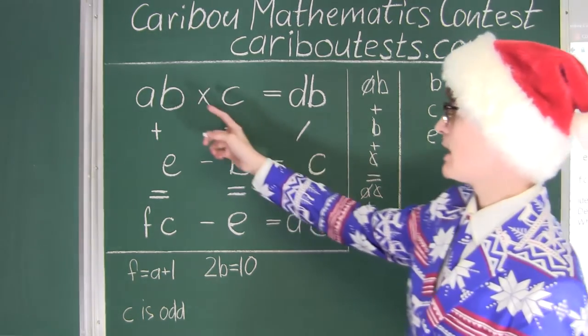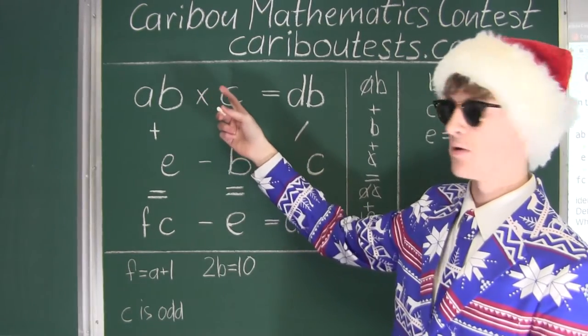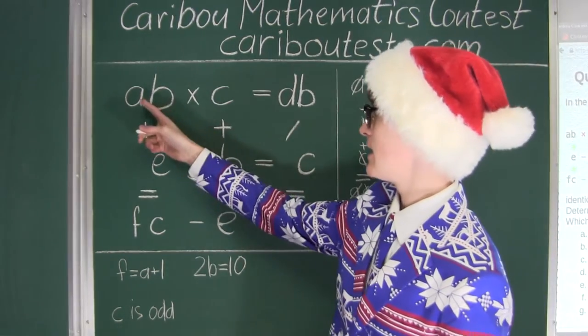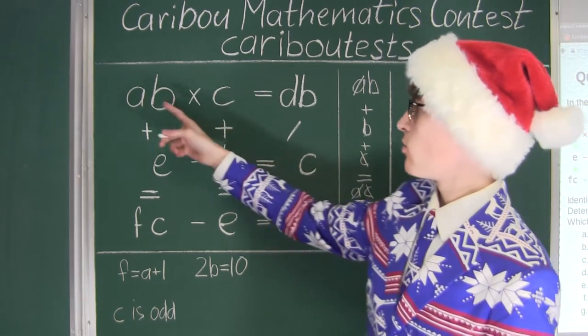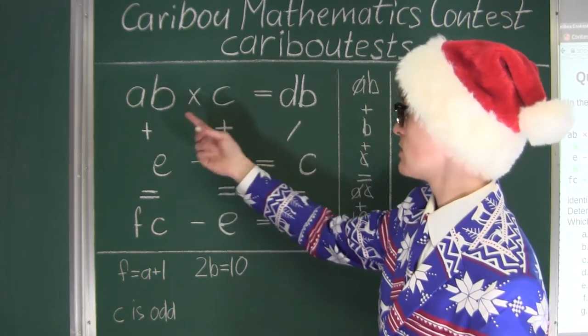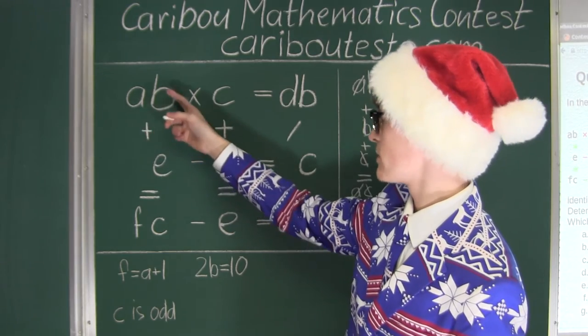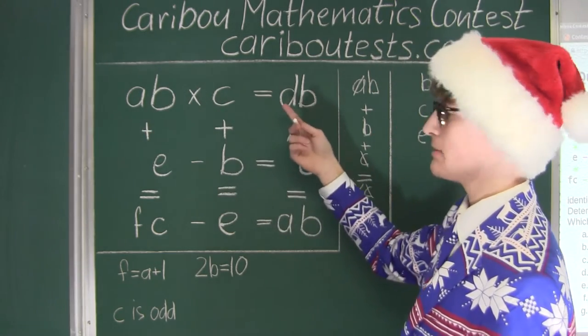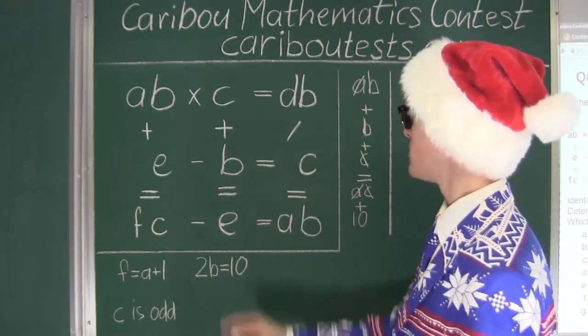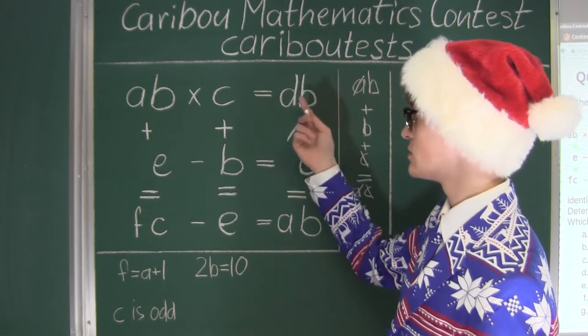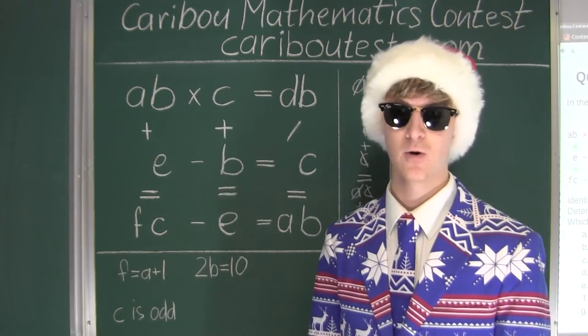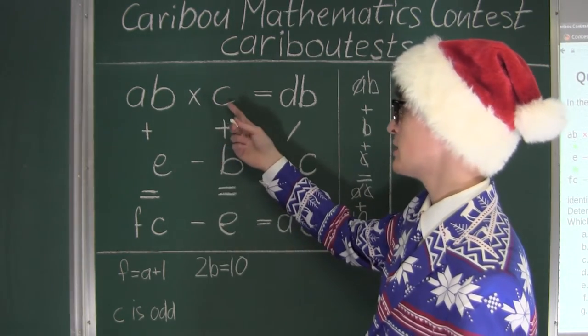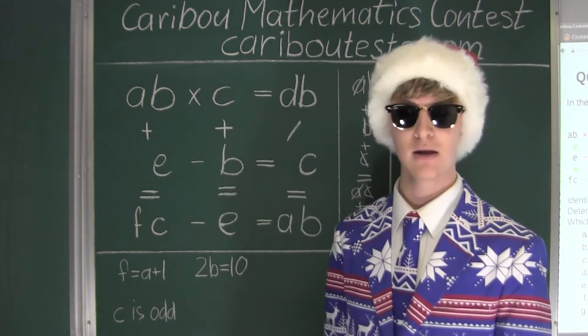Now let's look at the top row again. Here we have A and then it ends in five times three is equal to DB. Well, if A was four, well, 45 times three, that would already be over 120. But of course, DB is just a two-digit number. Well, that means that A must be less than four. And we know that C is three. So A must be either one or two.